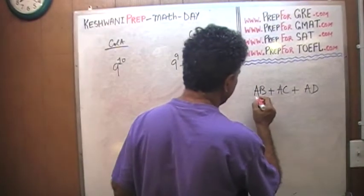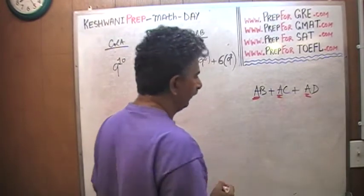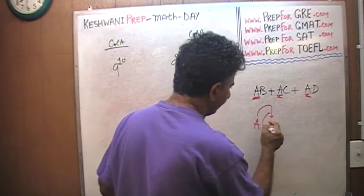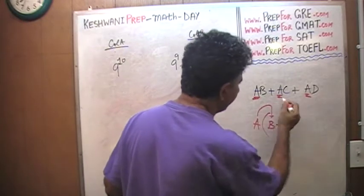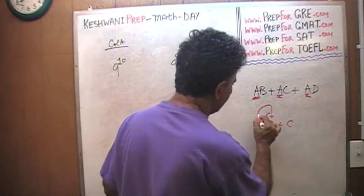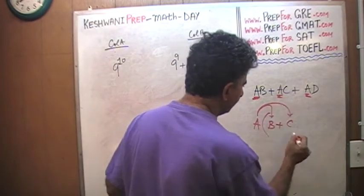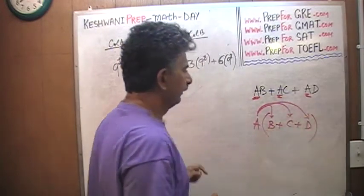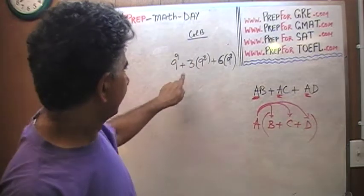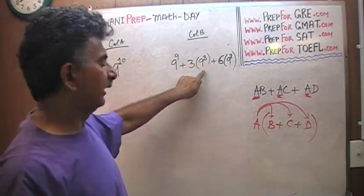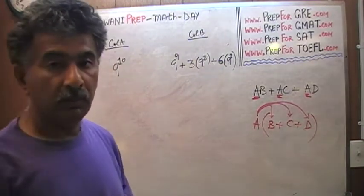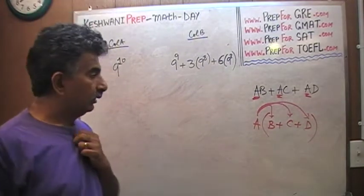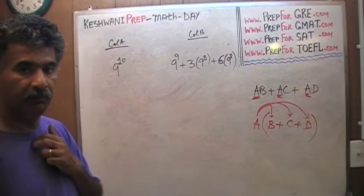Here we have three terms, and in all of them I see a common factor. So let's take out the a. If we take out a, we are left with b from the first term, c from the second term, and d from the third term — giving us a times (b plus c plus d). That is exactly what we need to do here. Pause the video right now, do the problem yourself, and then come back.